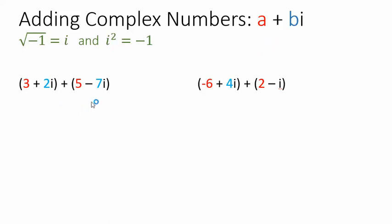A couple of facts about complex numbers that we have to remember: the square root of negative 1 is i, and i squared is negative 1. When we do the multiplication and division, the i squared equals negative 1 is going to be an important fact. But we're not going to put negative 1 back in for i, because we want our answers to be in the form a plus bi.